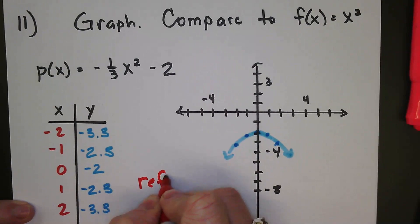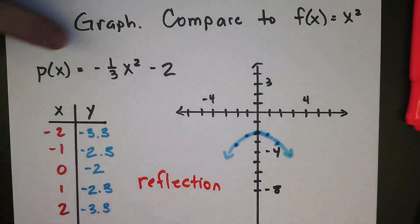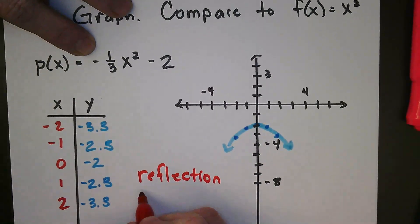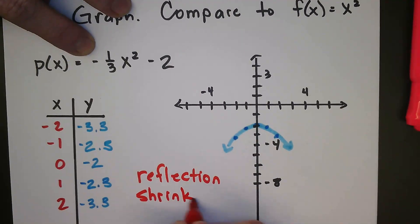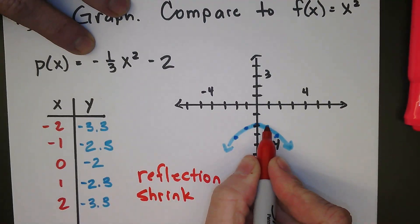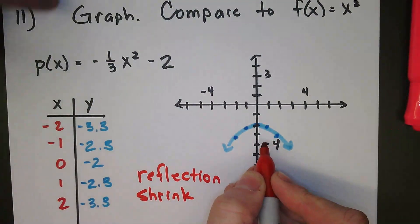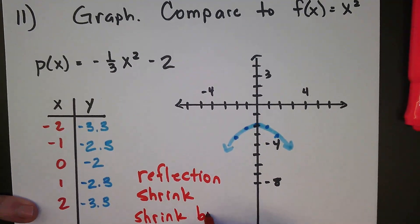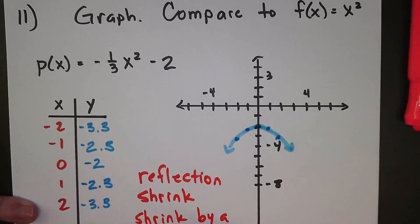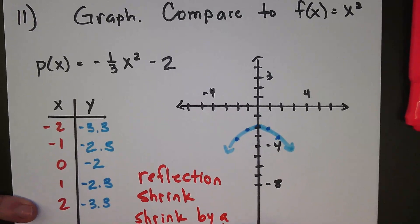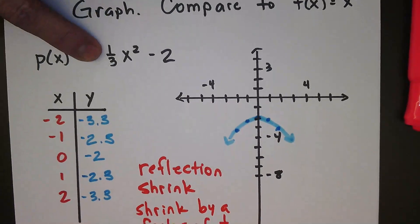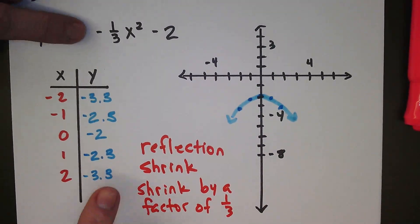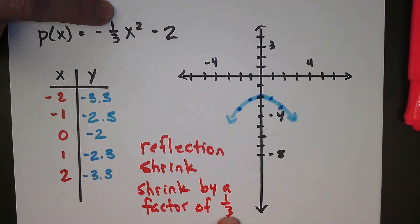So let's go ahead and get our comparison down. First thing, we have a reflection, and that is because of this negative. And then we also have a shrink. These are not going to the left and right one and then down a full value, they're only going down a third. So we have a shrink by a factor of one-third, and that's because we got the one-third right here. Okay, so the negative makes the reflection, the one-third gives us the shrink.